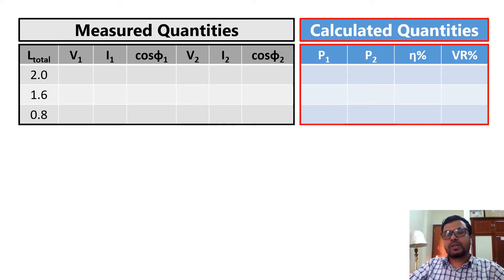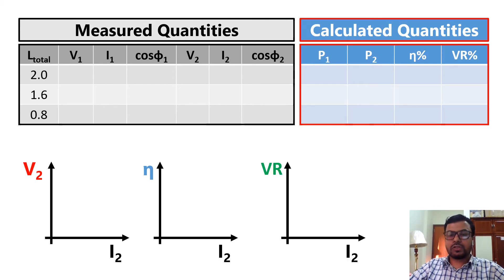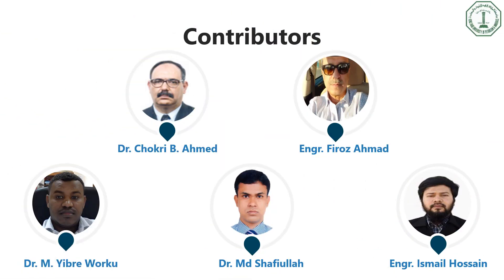Similar to the previous part, here we also have measured and calculated quantities. Now we need to plot V2 versus I2, efficiency versus I2, and voltage regulation versus I2. That's all. Good luck for your report.